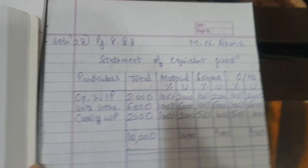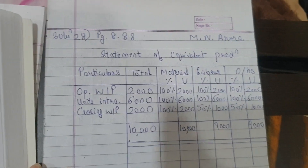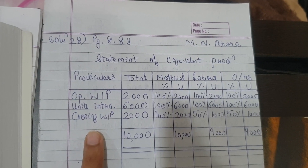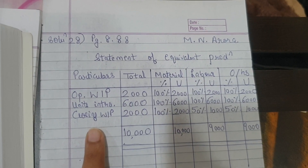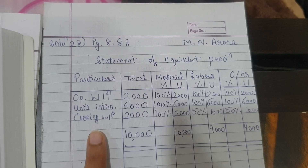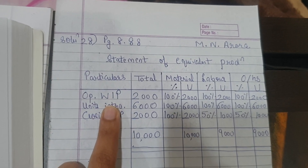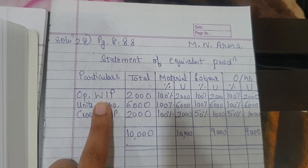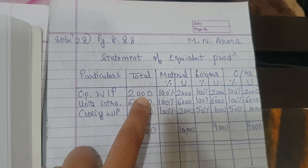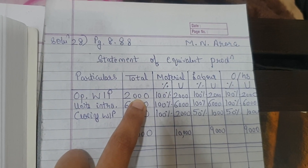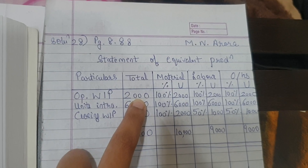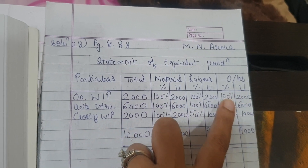Let us start doing the sum. First, we prepare the statement of equivalent production. My technique for solving the sum: when I solve using average method, I always take the opening WIP units and irrespective of what stage of completion is given, I don't consider that - and I take hundred percent in all three elements.